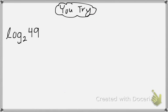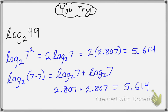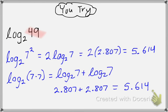Now use the same given values to find log base 2 of 49 — and if you want to challenge yourself, try it using two different properties: the product property and the power property. Using the power property: rewrite 49 as 7 squared, move the exponent out front, then substitute 2.807 for log base 2 of 7 and multiply by 2 to get 5.614. You can also use the product property: 49 is 7 times 7, expand using the product property, add the two values, and you get the same answer.